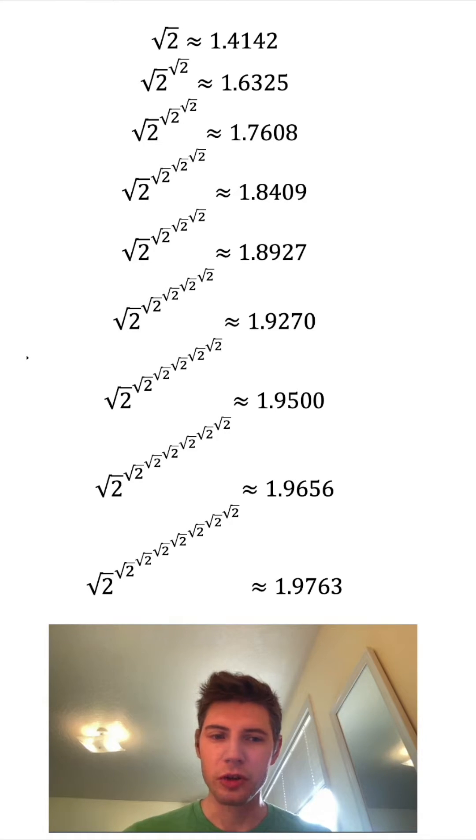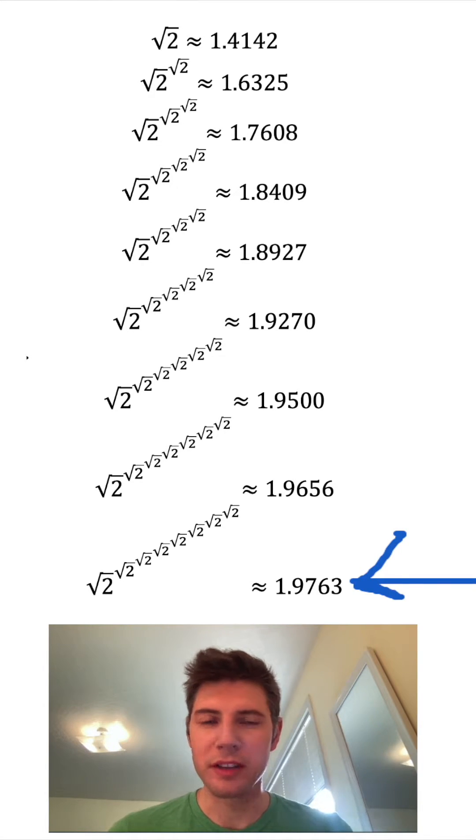They start to slow down as they approach two. This one right here is approximately 1.9763. So we can see that as we continue adding more of these, it's approaching two.